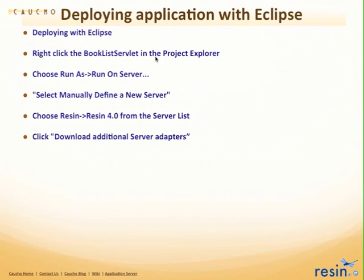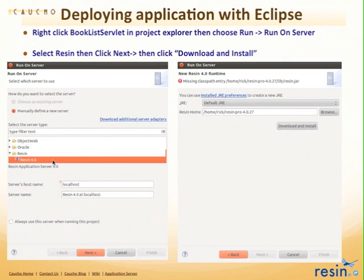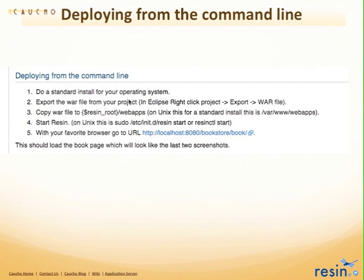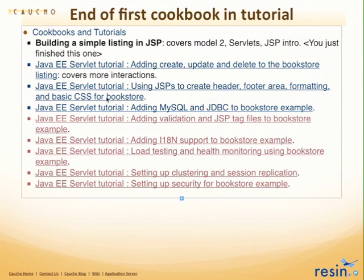When you're ready to deploy, right-click on the servlet, choose Run As > Run on Server. The first time you'll need to set up Resin: select Resin, hit download, install it on your local machine, and it becomes your server. From then on Resin is integrated in Eclipse. For command-line deployment, copy the WAR file to the webapps folder — on Linux that's /var/www/webapps, and on Windows copy it to the webapps folder from the standard install.